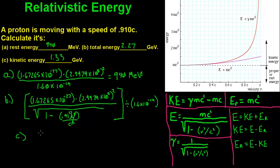To summarize: kinetic energy equals E minus E_R. And that is how you solve that problem — pretty simple.